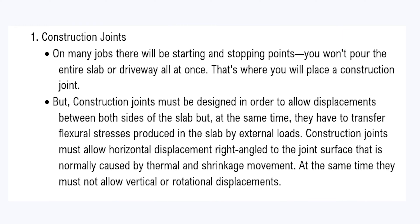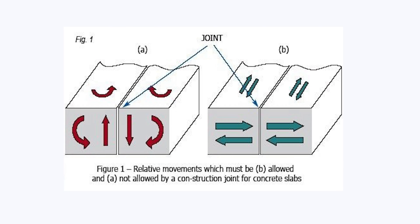Construction joints must allow horizontal displacements right-angled to the joint surface, which is normally caused by thermal and shrinkage movements. At the same time, they must not allow vertical or rotational displacements, as these displacements cause breakage of the concrete.